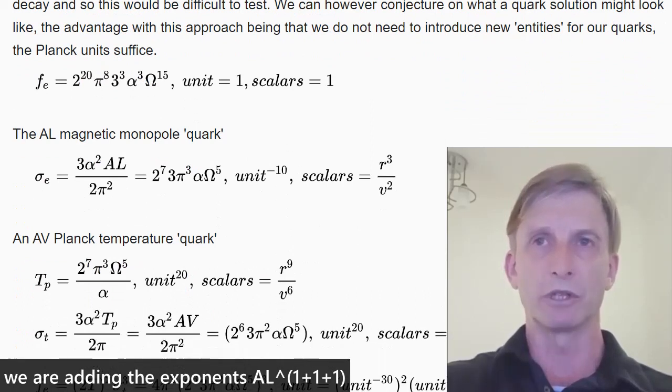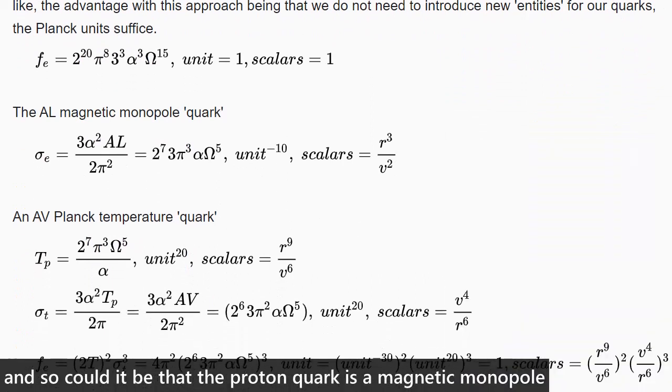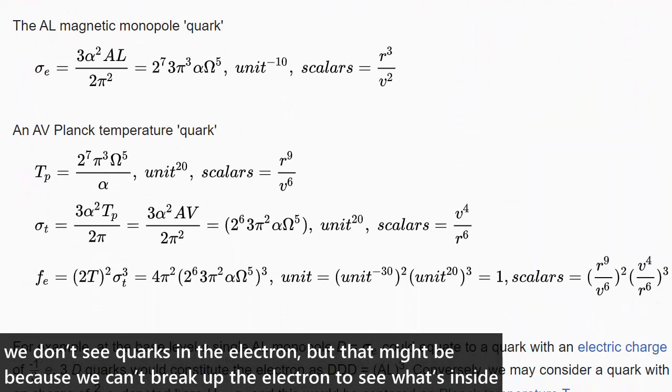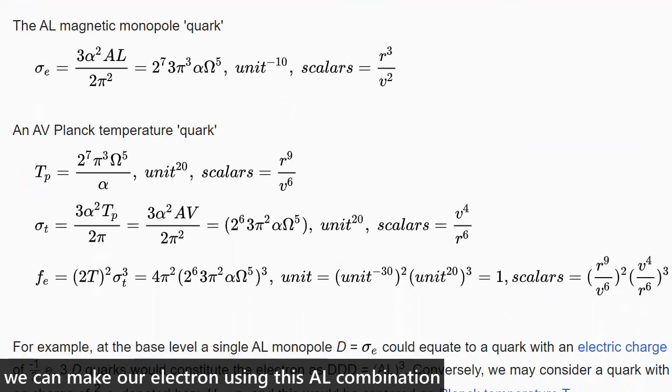We are adding the exponents. And so could it be that the proton quark is a magnetic monopole? We don't see quarks in the electron, but that might be because we can't break up the electron to see what's inside.